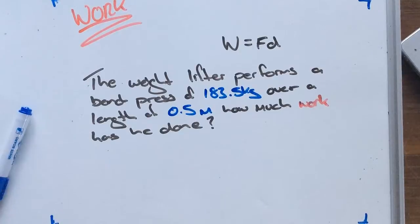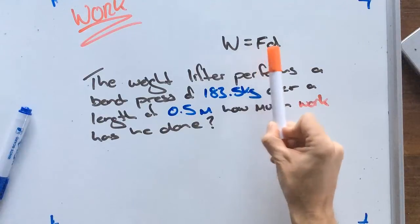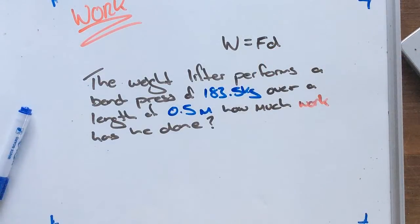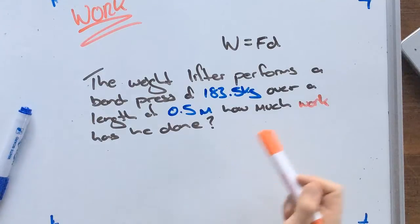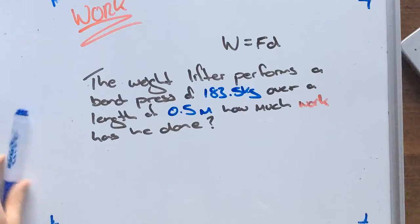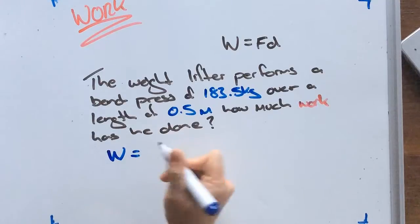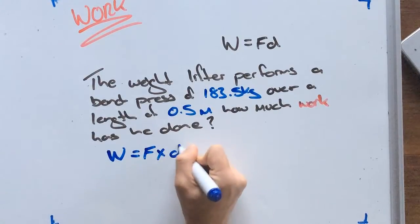Kia ora team. So today what we're going to do is look at how to calculate for work. Work is found by taking the force and multiplying it by the distance. If we get a question that states: the weightlifter performs a bench press of 183.5 kg over a length of 0.5 meters, how much work has he done? Our formula for work is: work is equal to force times distance.